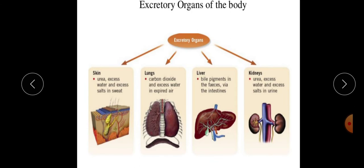Now, excretion happens through various organs in the human body. These organs are called excretory organs. These include skin, lungs, liver and kidneys.